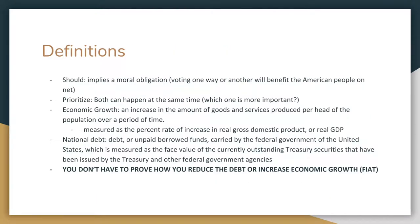Now let's talk about definitions. These are broad, obvious definitions, but any change in definitions could really alter how the round goes. Number one, the word 'should' implies a kind of moral obligation — that voting one way or another will pose a net benefit to the American people. Similarly, 'prioritize' means which one is more important. You can have both happening at the same time — the economy growing while reducing the national debt — but which one is more important is essentially what you're arguing. Economic growth is usually measured as an increase in goods and services produced per head of the population over a period of time.